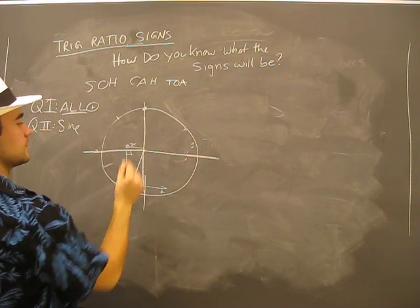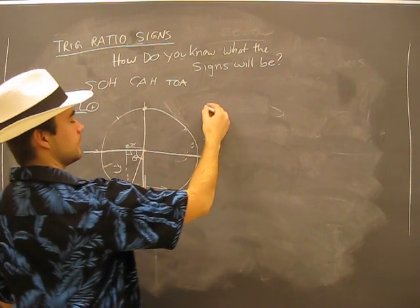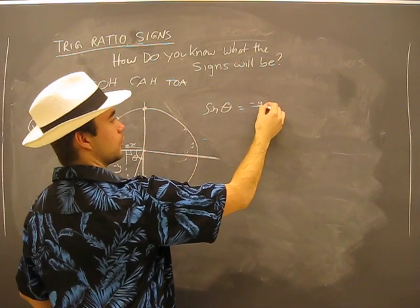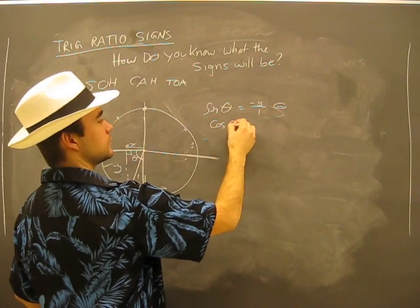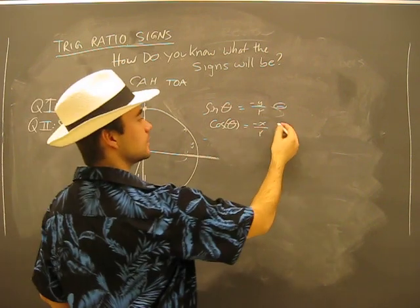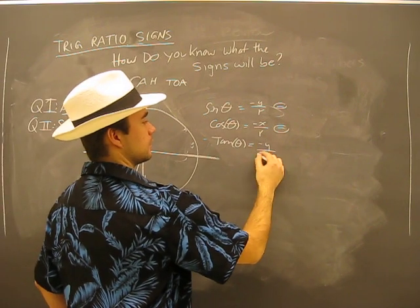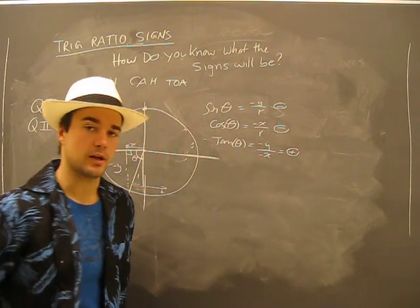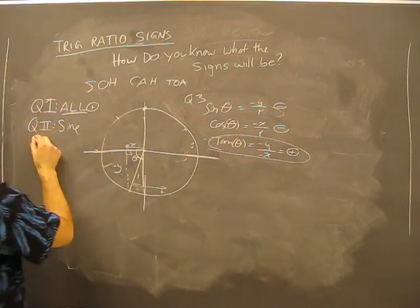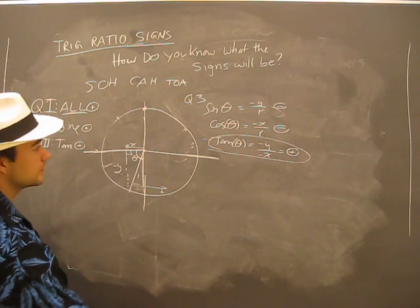In quadrant three, we're going negative x and also going down, so we have negative y. Sine theta equals negative y over r — that's negative. Cosine theta equals negative x over r — that's also negative. Tan theta is opposite over adjacent, so negative y over negative x — dividing a negative by a negative gives a positive. So for quadrant three, the only positive ratio is tan.